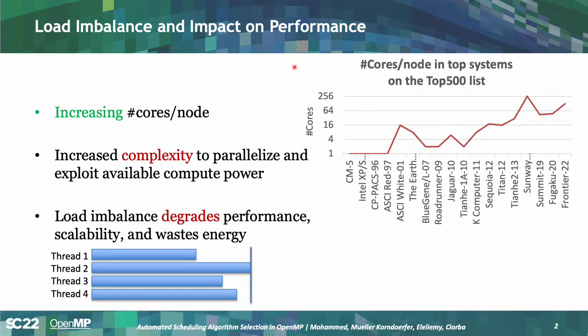We start with a brief introduction about load imbalance and its impact on performance. On the top right we have the number of cores versus the top systems in the Top 500 list across the years. What we notice is that the number of cores per node in these top systems has been increasing over the years, and currently we can expect a few hundred cores per node in modern HPC systems.